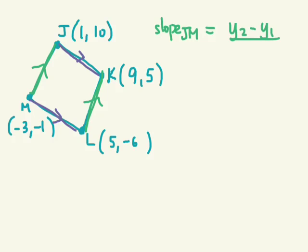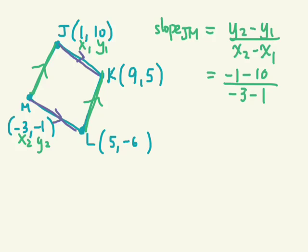Y2 minus Y1 over X2 minus X1. We'll start with J, M. I'm going to call this X1, X2, Y2. So negative 1 minus 10 over negative 3 minus 1.